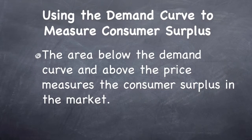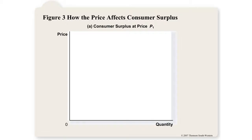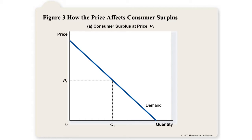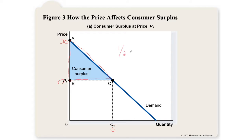Using a traditional demand curve, consumer surplus is measured as the area below the demand curve and above the price. On a graph, this is represented by a triangle. For example, if the equilibrium price is $10, the top of the demand curve is $20, and the base is 5 units, consumer surplus is calculated as one-half base times height: ½ × 5 × 10 = $25.